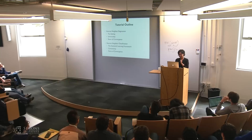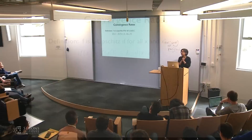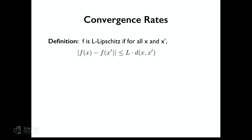Now let's look at convergence rates — can we say something about finite n? For regression, we'll need some more assumptions. I'll start with a couple of definitions.